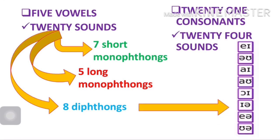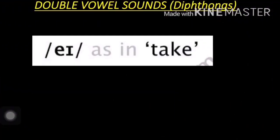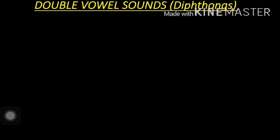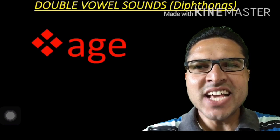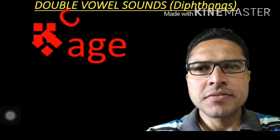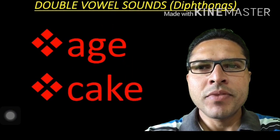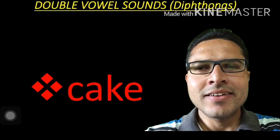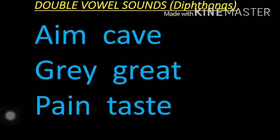The eight diphthong sounds are: /eɪ/, /oʊ/, /aɪ/, /ɔɪ/, /ʊə/, /l/, and /ʊə/. The first sound is /eɪ/, as in 'take', 'age', 'cake'. More examples: aim, gave, gray, great, pain, paste.